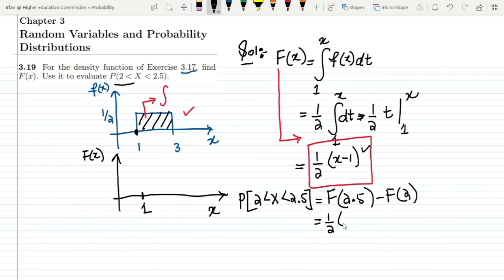Now let me put these values and here I will get 1/2 and x minus 1 is 2.5 minus 1 so it will be 1.5 and minus 1/2 and here it will be 2 minus 1 is 1.